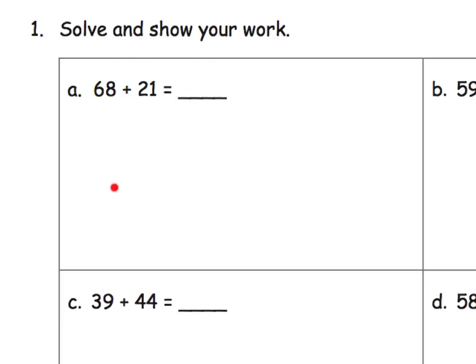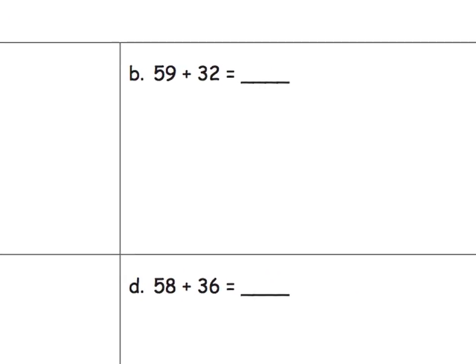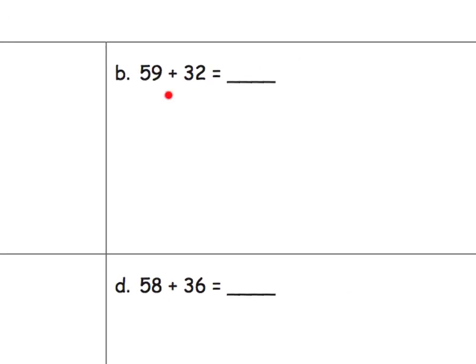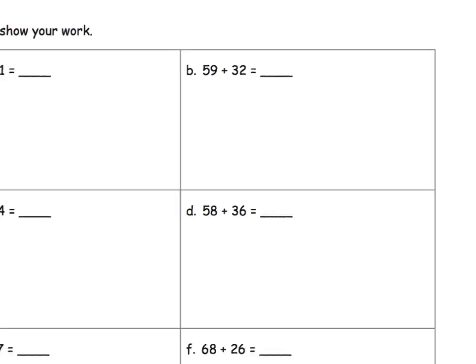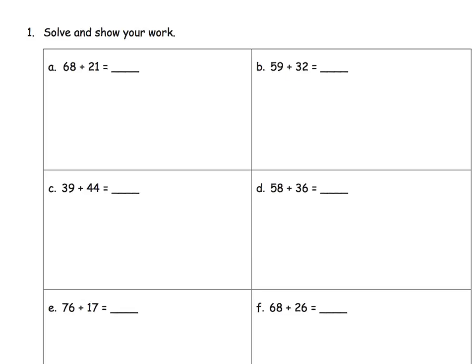And we start off with a nice simple problem. And then we move to a problem where we just barely go over 10, right? 9 plus 2 is 11. So we just barely go over 10. And also, it's easy because it's really close to the decade because it's 59. And we still stick around and it's 39. It's pretty close to the decade. So we're kind of nudging the kids towards one particular strategy.